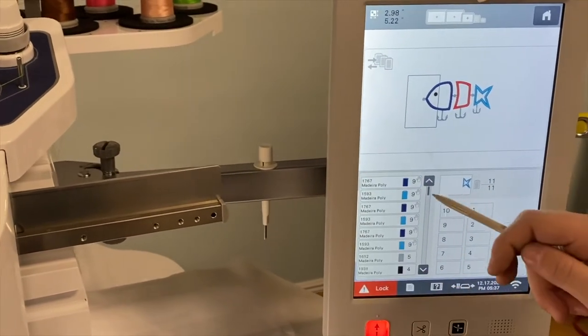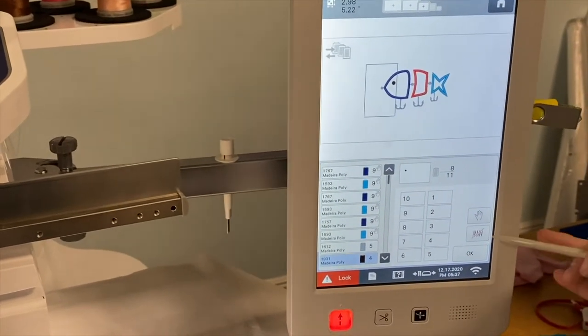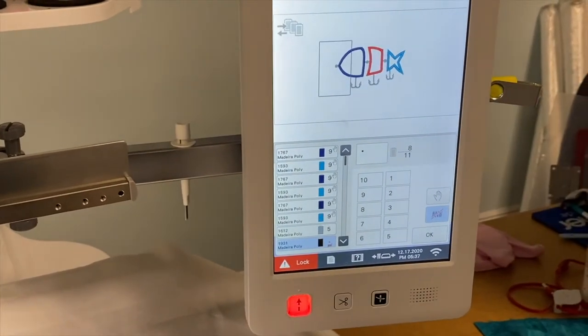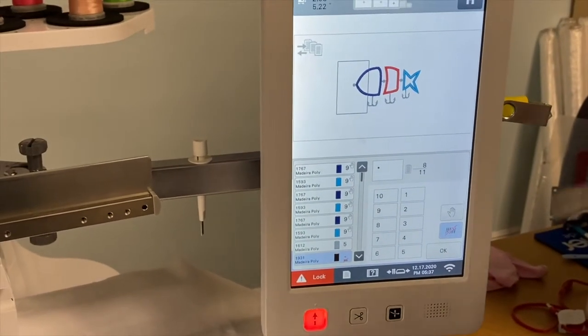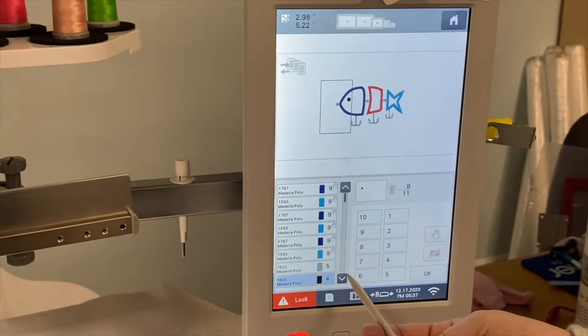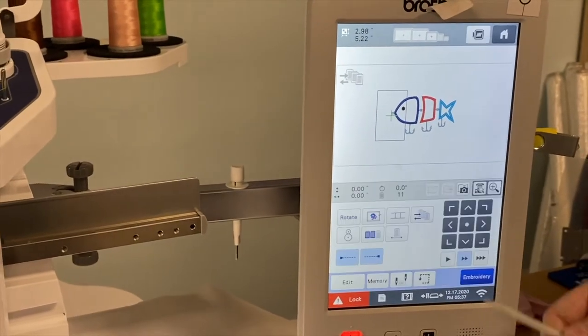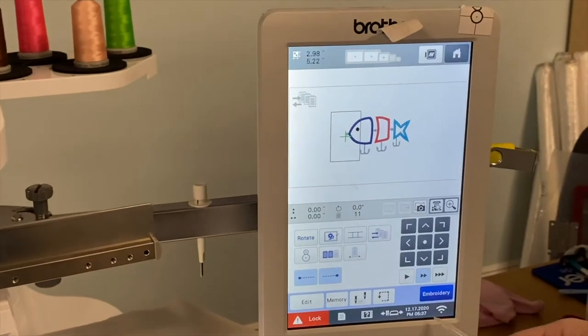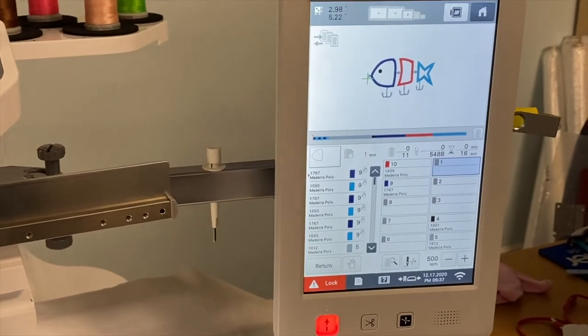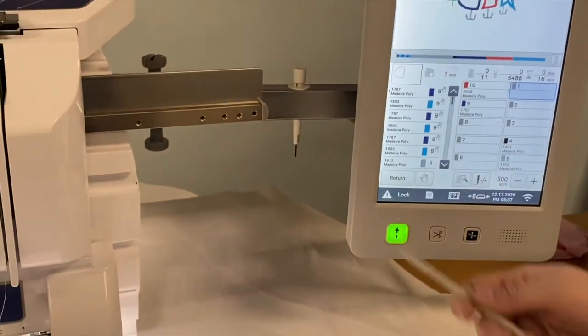Now say I don't want it to stitch the eye for some reason - you can hit this no sew, and when you hit that it actually disappears from the design so you know it's not supposed to sew that. We need the eye so we're pretty good. We set our colors, put our stops, and we're ready to go to the next screen. So let's press OK and embroidery. Now I'm ready to press lock and start.